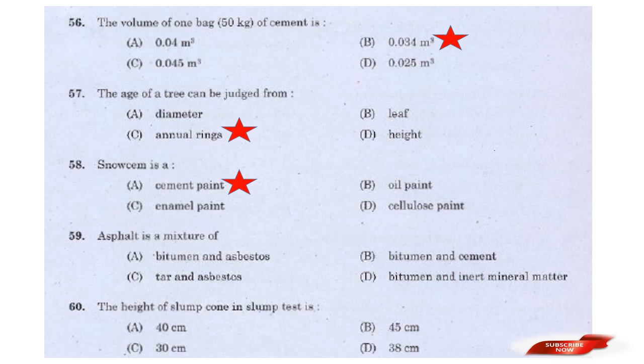Question: Asphalt is a mixture of — options: Bitumen and Aspartout, Bitumen and Cement, Tar and Aspartout, Bitumen and Inert Mineral Matters. Answer: Option D — Bitumen and Inert Mineral Matters. Asphalt is a mixture of bitumen and inert mineral materials.